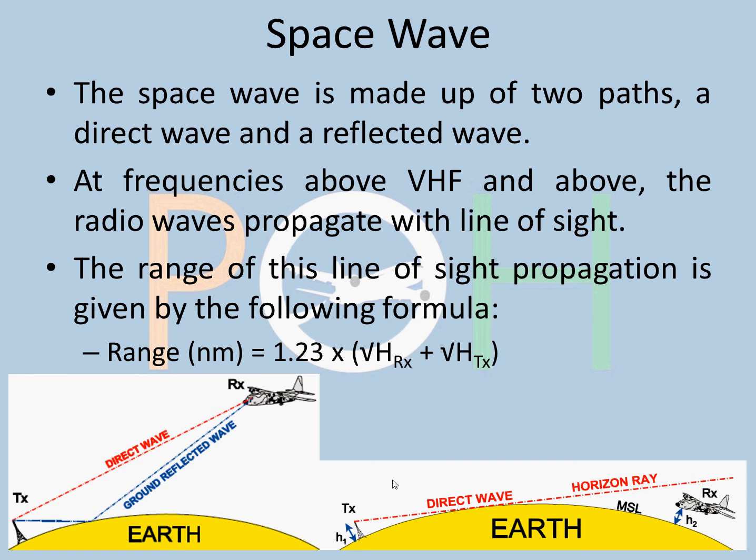Now there is something called a space wave. A space wave is made up of two parts: a direct wave and a ground-reflected wave. At frequencies above VHF and above, the radio waves propagate with line of sight. And this range is given with this formula: range in nautical miles equals 1.3 times the square root of height of the receiver plus height of transmitter in thousands of feet. This will give you the range.